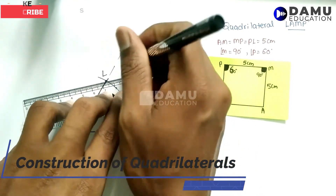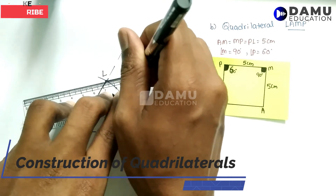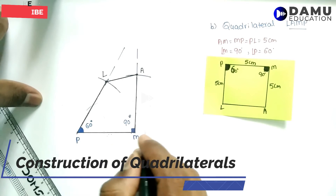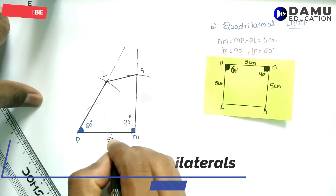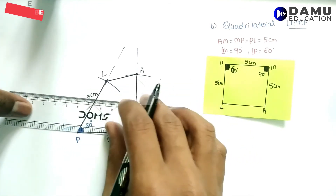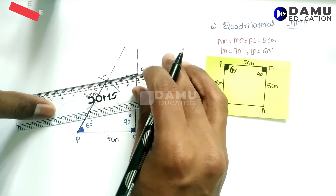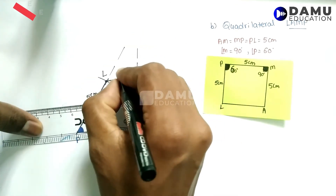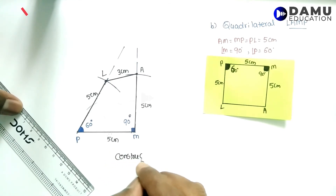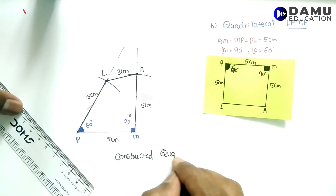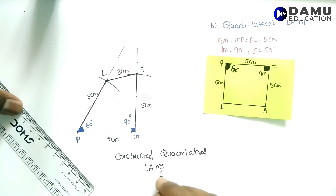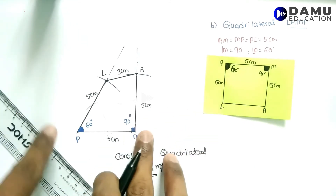Now we are going to join both points to complete the quadrilateral. So we have constructed the quadrilateral LAMP. We can verify: this side is 5 centimetres, this is 5 centimetres, and this side measures exactly 3 centimetres.